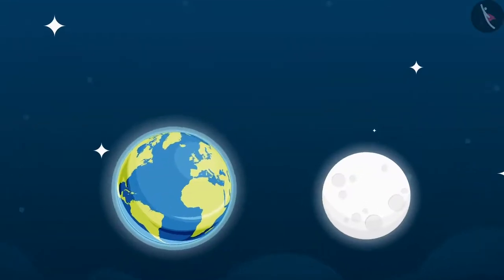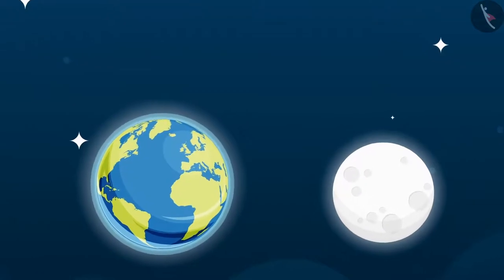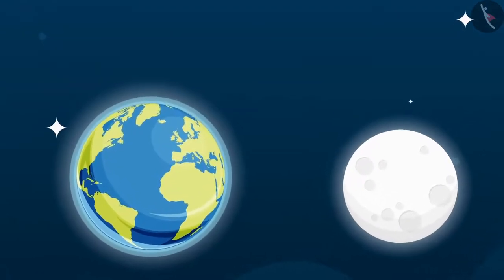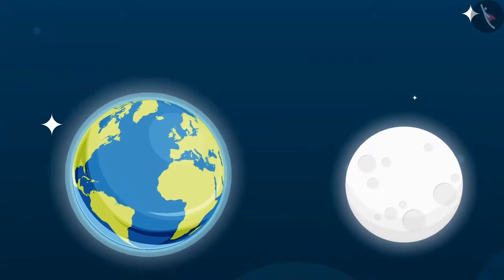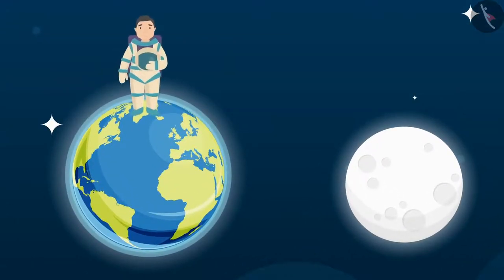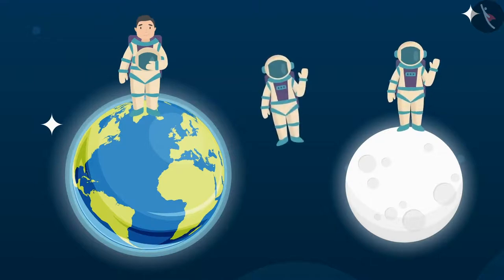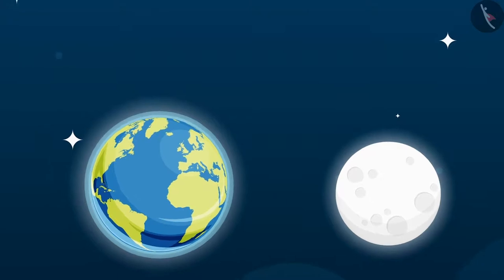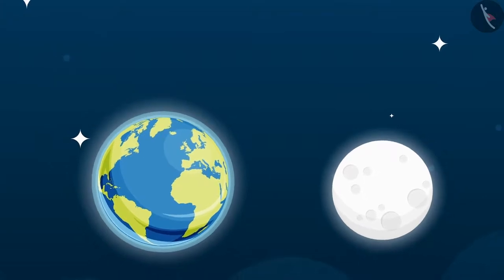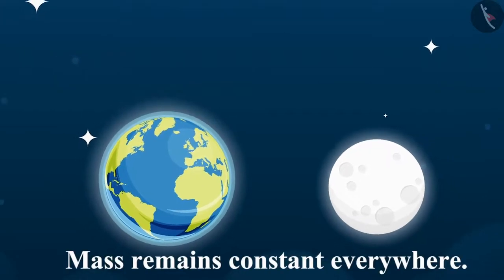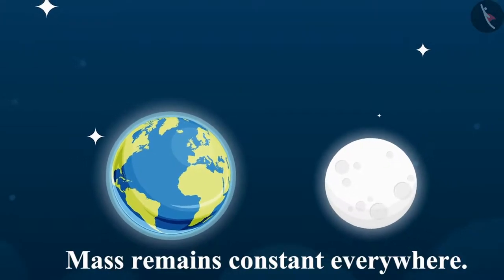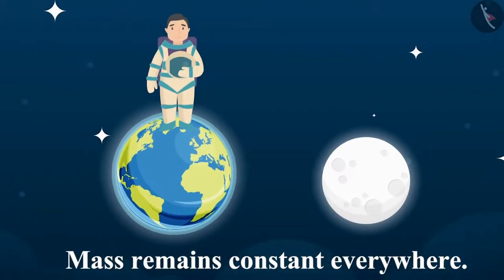The mass of an object remains the same everywhere. It doesn't matter whether the object is on the earth, the moon, or even in outer space. Therefore, we can say that the mass of an object remains constant.